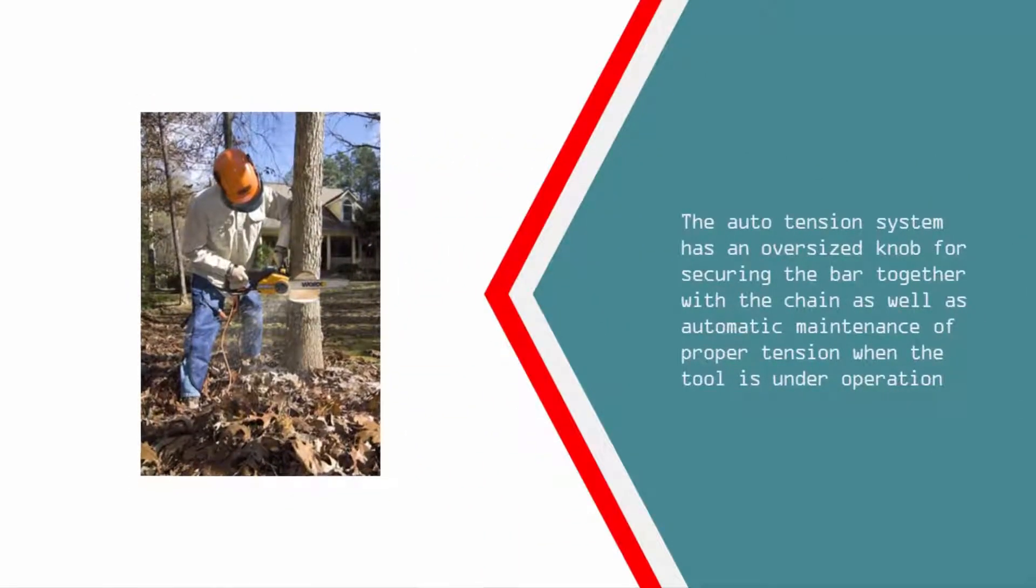The auto-tension system has an oversized knob for securing the bar together with the chain, as well as automatic maintenance of proper tension when the tool is under operation.